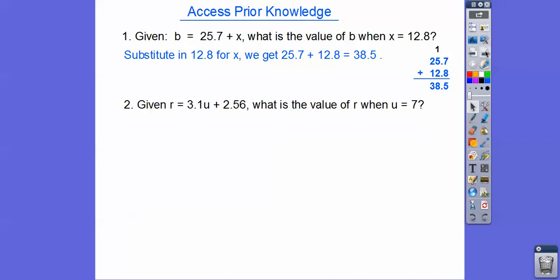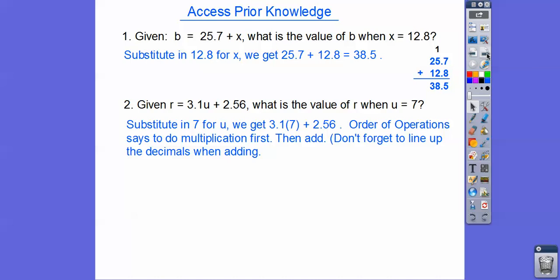How about this one? Given r equals 3.1u plus 2.56, what's the value of r when u equals 7? We're going to plug in u equals 7, which means multiply. We follow the order of operations — multiplication first. So 7 times 1 is 7, no carry, and 7 times 3 is 21. Move the decimal over one place, because there's one decimal place, giving us 21.7.